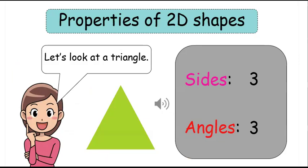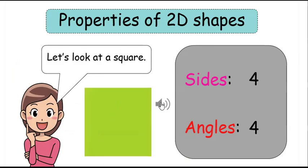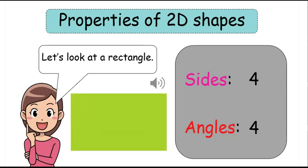A triangle has 3 sides and 3 angles. A square has 4 sides and 4 angles. A rectangle has 4 sides and 4 angles.